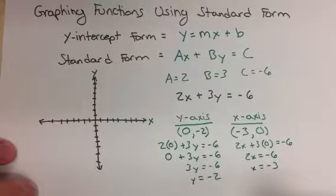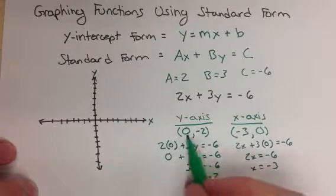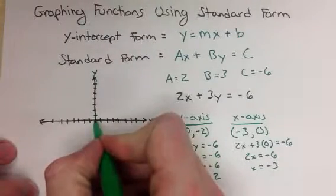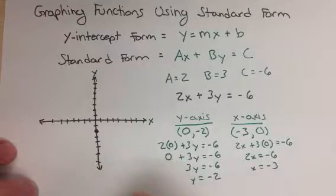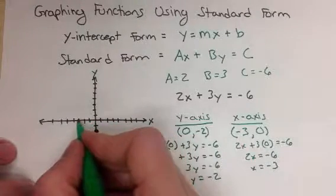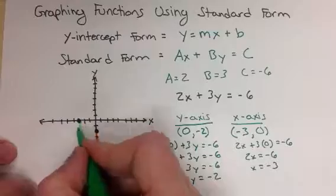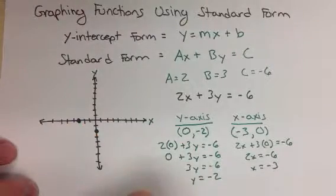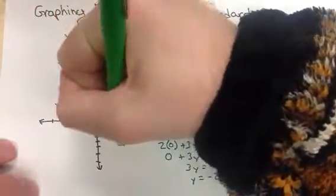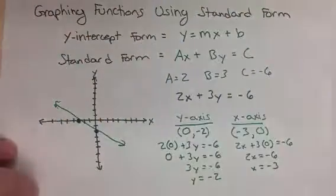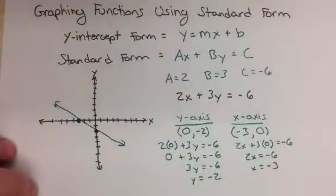I only need 2 points to graph a line. So I have 0, negative 2, and negative 3, 0. So 1, 2, 3, 0. I only need 2 points, so now I can draw a straight line through those 2 points. So that's how I would graph a line in standard form.